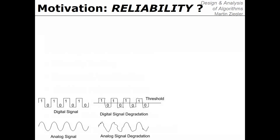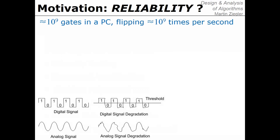Why would we even want to revert to unreliability and randomization? Let's discuss how reliable current personal computers actually are. Contemporary PCs easily have 10 to the 9 gates in the CPU — that's like 1 billion transistors — running at 1 gigahertz frequency, meaning the gates are flipping 10 to the 9 times per second. That's an incredible number of operations going on, and if any of these go wrong, the whole computation may blow up, like a blue screen.